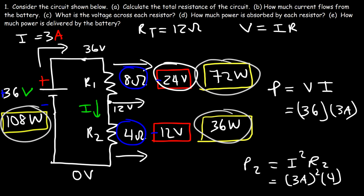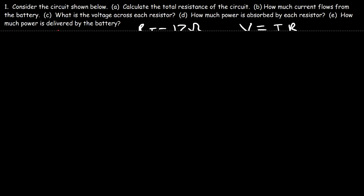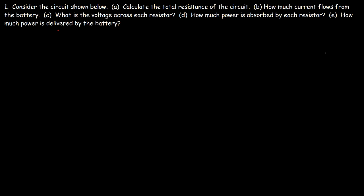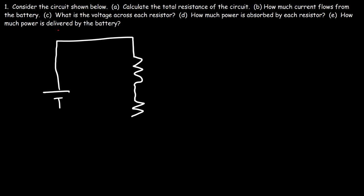Now let me give you another example. Instead of two resistors, we're going to use three resistors in a series circuit, and I want you to answer every question just like before. We're going to have the battery and three resistors.